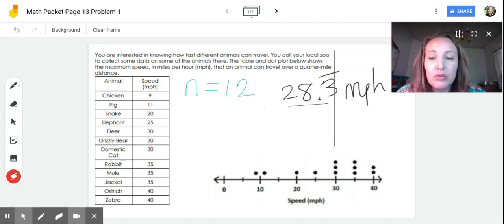Bimodal, the two modes are 30 and 35. They each have a frequency of three, correct? Okay. So it's bimodal.